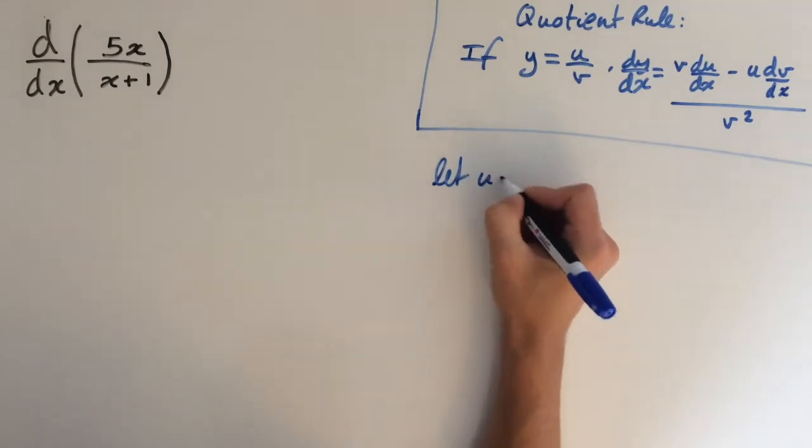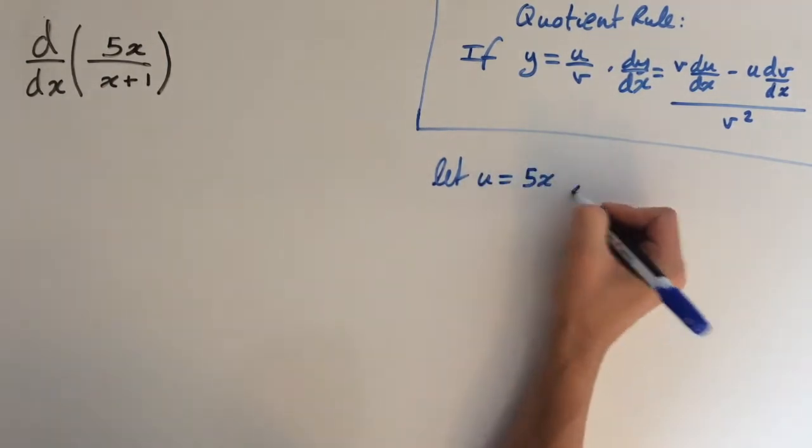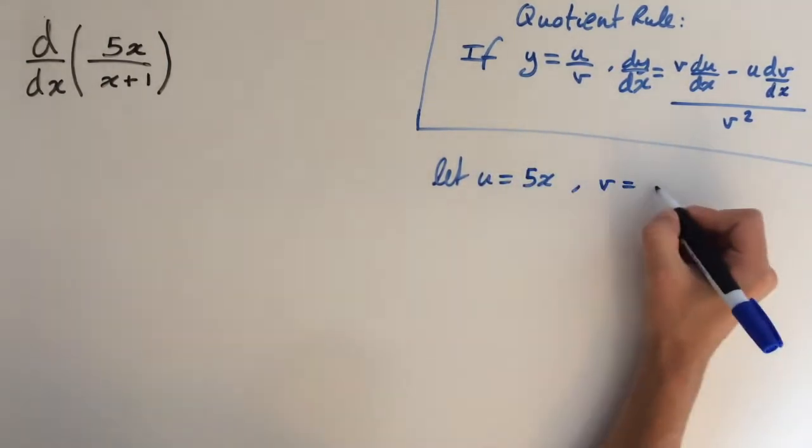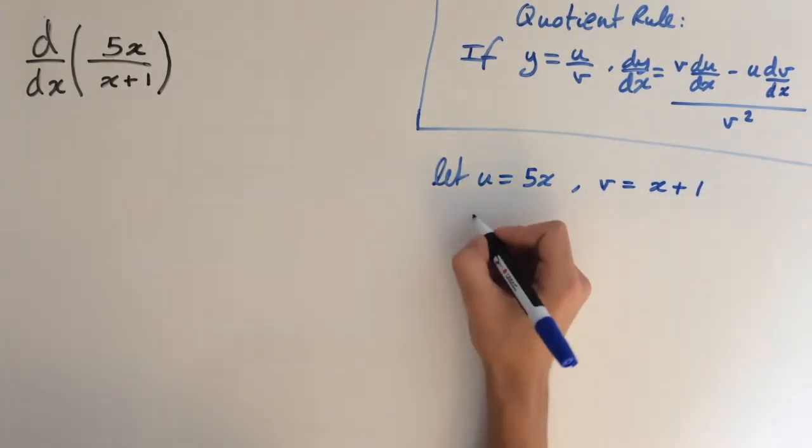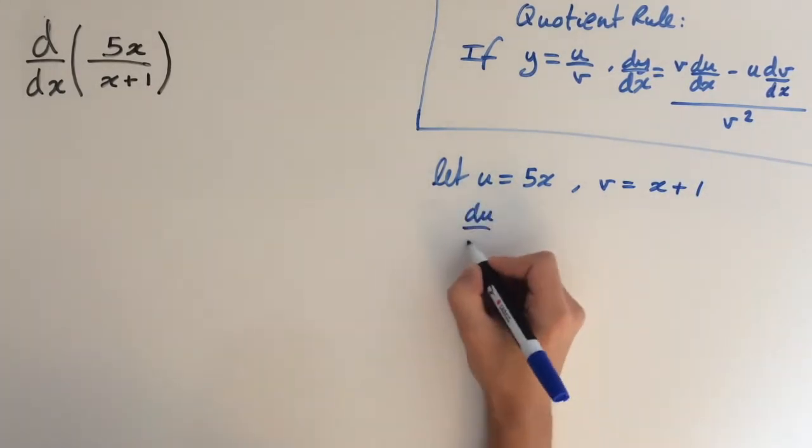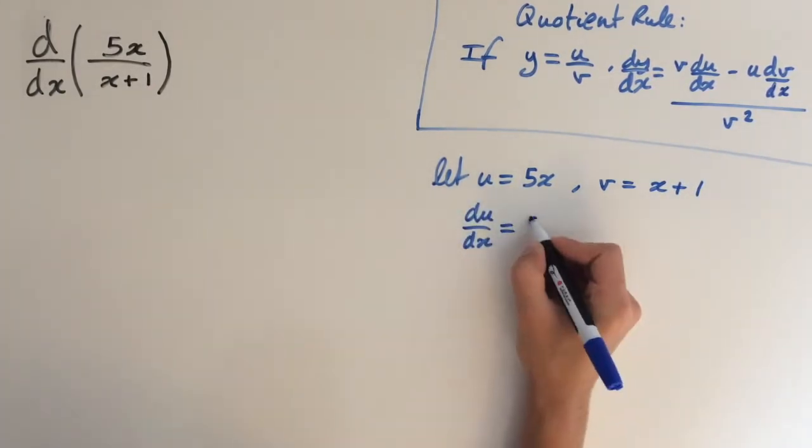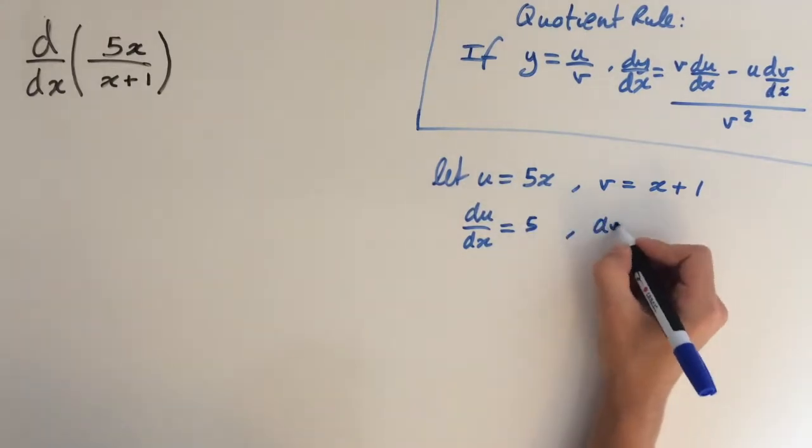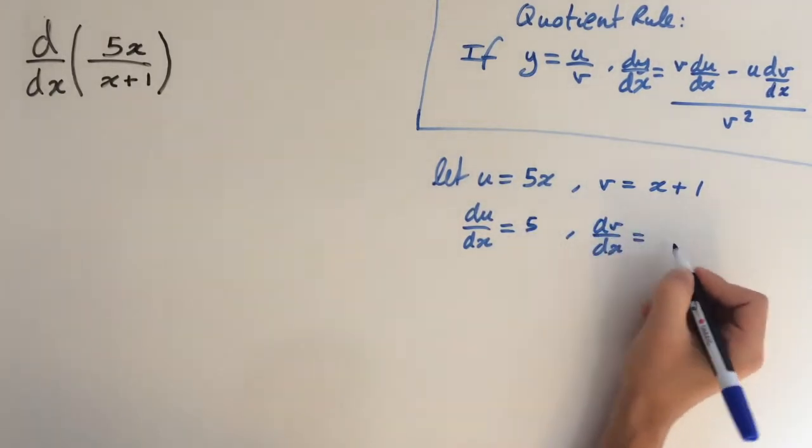So we're going to let u equal 5x and v equal x plus 1. Now we need to differentiate. So du/dx equals 5 and dv/dx equals 1.